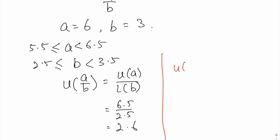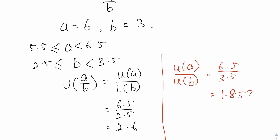To give you an example, let us do the alternative. If we were to divide by the upper bound of b, we would have 6.5 divided by 3.5, and that gives 1.857. Clearly 1.857 is smaller than 2.6, and as such it cannot be the upper bound of a over b.